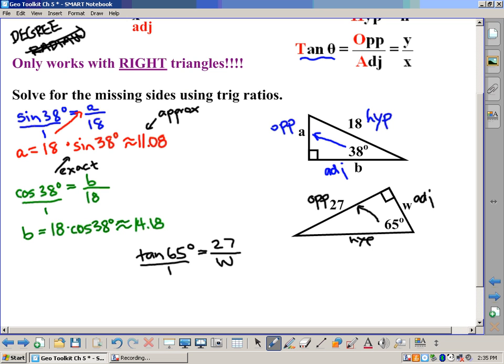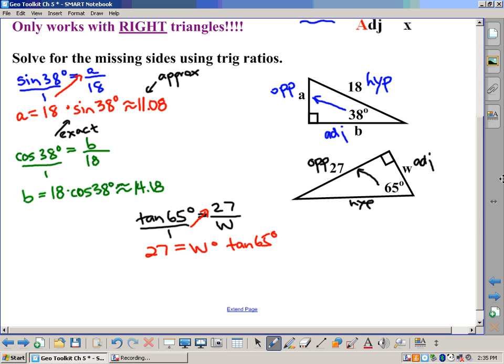Put tan 65 over 1. Go ahead and cross multiply. So 1 times 27 would equal W times tangent of 65 degrees. You can go ahead on both sides and divide by tangent 65. So we wind up getting, in this case then, W equals 27 divided by tangent 65 degrees.